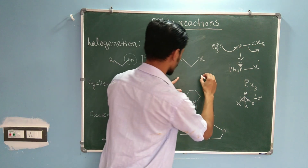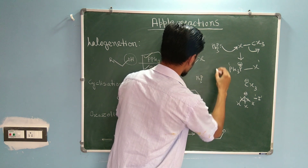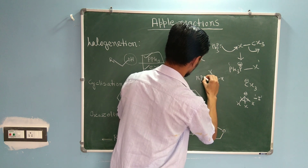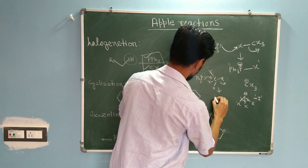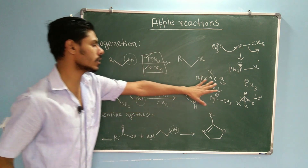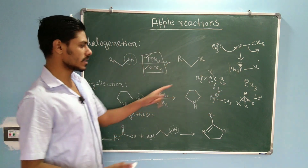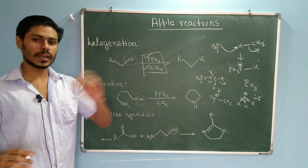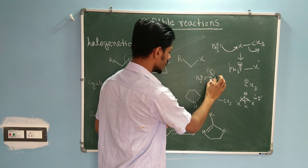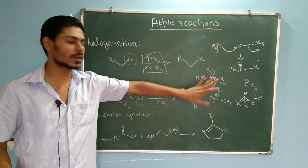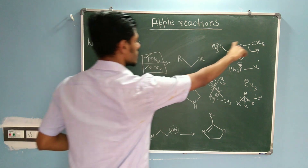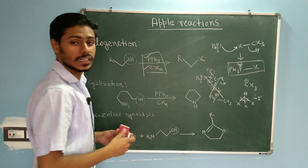A common mistake is to think that PPh3 attacks the carbon atom of CX4. I have seen this type of mechanism in several places, but it is actually wrong. Even though X⁻ is a good leaving group, this attack is not possible because, due to the presence of three halogen atoms, the σ* orbital on carbon is not accessible — it is sterically very much hindered. So the correct mechanism is the one giving Ph3P+–X as the active reagent.